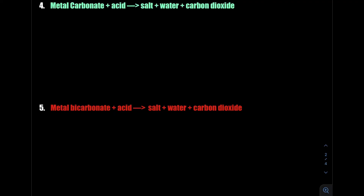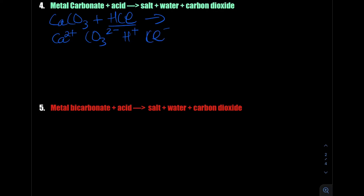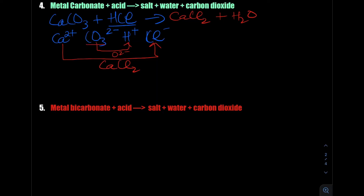The next type is metal carbonate plus acid, which gives salt, water, and carbon dioxide. Let's take calcium carbonate reacting with hydrochloric acid. Calcium is in group 2, and carbonate CO₃²⁻ is a polyatomic ion. HCl donates a proton and a chloride conjugate base. There's an ion exchange: calcium bonds with Cl⁻ forming calcium chloride. The O²⁻ bonds with H⁺ forming water, and what remains is carbon dioxide.